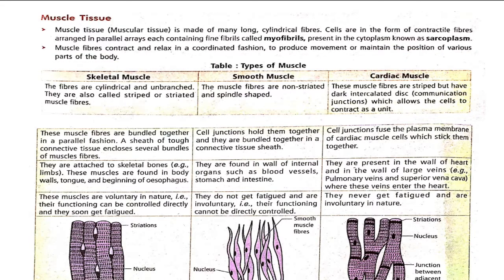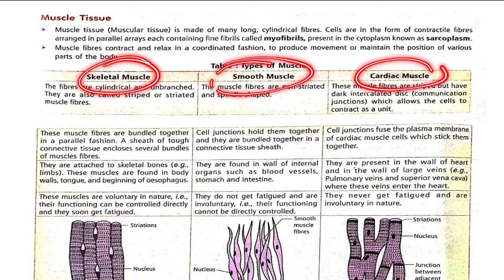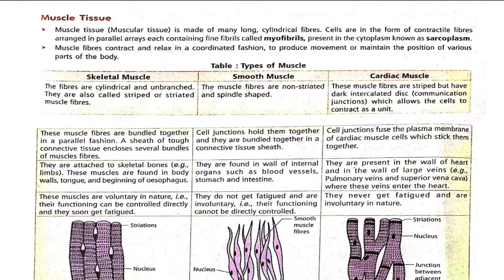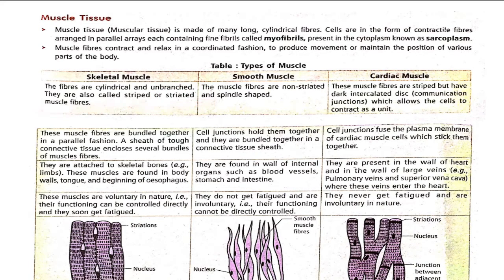Types of muscle: skeletal muscle, smooth muscle, and cardiac muscle. Skeletal muscle fibers are cylindrical and unbranched. They are also called striped or striated muscle fibers — mainly striated muscle fiber.